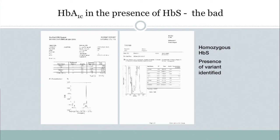Here is the bad: hemoglobin S. On the left is a patient with homozygous hemoglobin S; on the right, a similar patient analyzed on the D-100. The presence of the variant is identified, we know what it is, we know that any result generated is invalid, and so we can report that this patient has homozygous S and that caution is needed in treating this patient for diabetes.